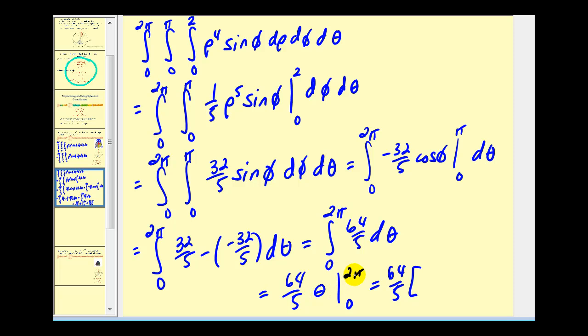When theta is two pi, we'll have two pi; when theta is zero, we'll have zero. So we get one hundred twenty-eight pi over five for this triple integral.